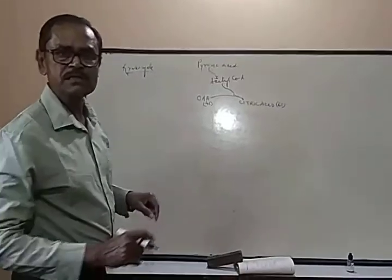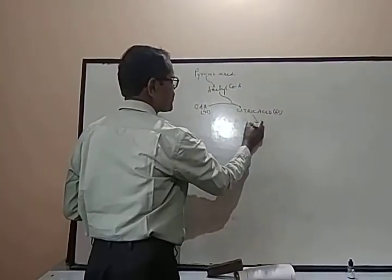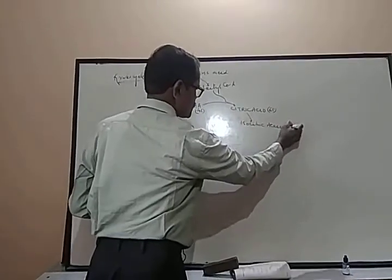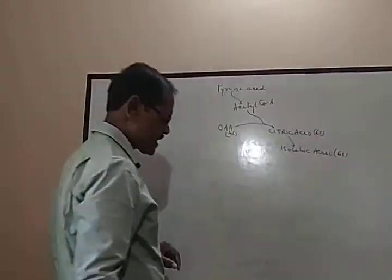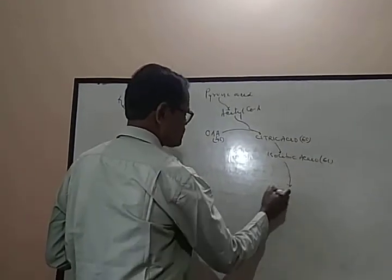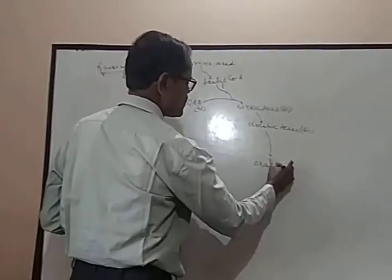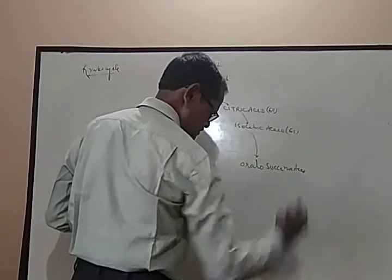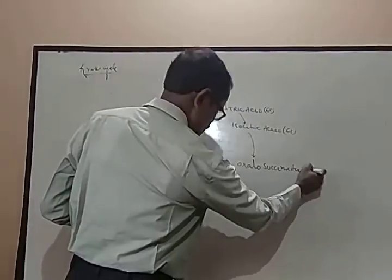Citric acid converts into isocitric acid. Isocitric acid, that is also a 6-carbon containing compound. Isocitric acid converts into oxalosuccinic acid, which is a 6-carbon containing compound.